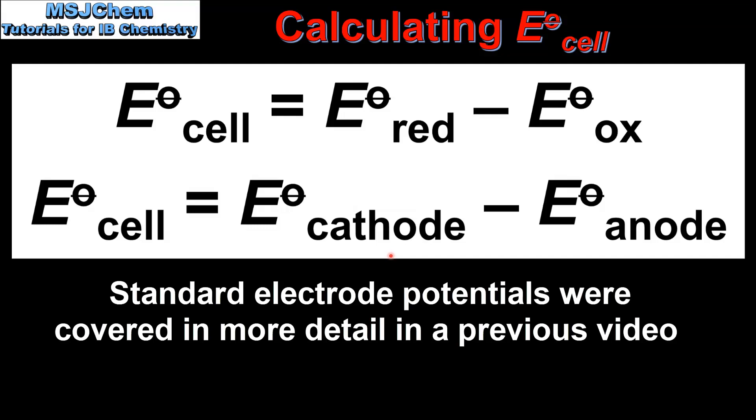The reason we can use either equation is that reduction takes place at the cathode and oxidation takes place at the anode.